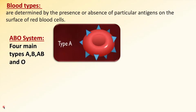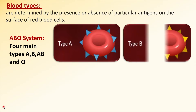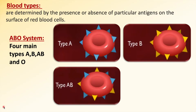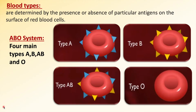The presence of antigen A gives us type A. The presence of antigen B gives us type B. The presence of both antigens gives us type AB. But the absence of both gives us type O.